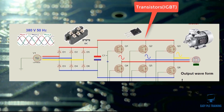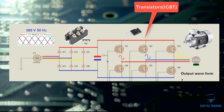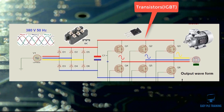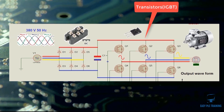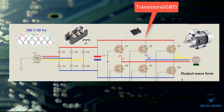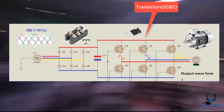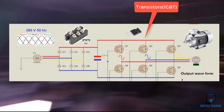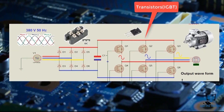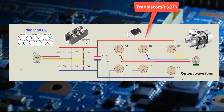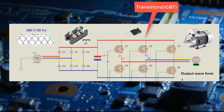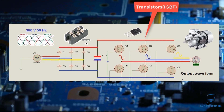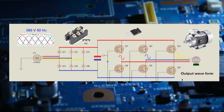The clean signal from the capacitor is then passed through the transistors. There are six transistors, or IGBTs. When the signal passes through these transistors, it is converted back to AC. These transistors or IGBTs are acting as switches.